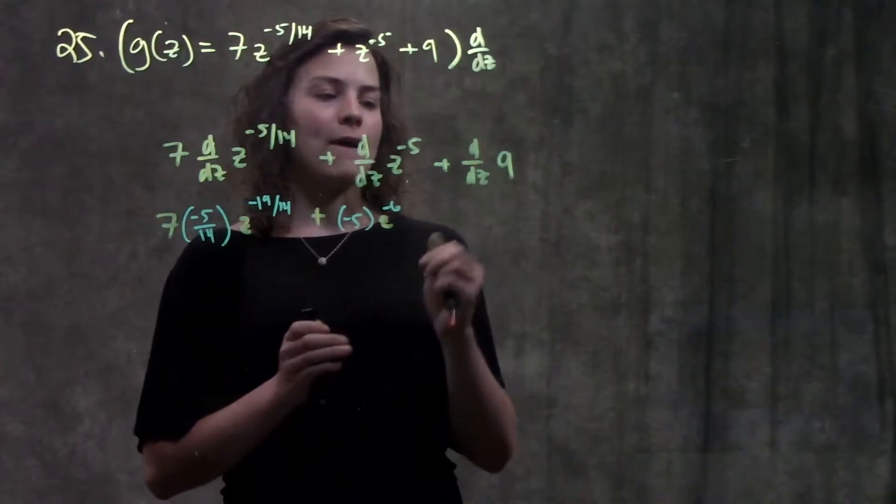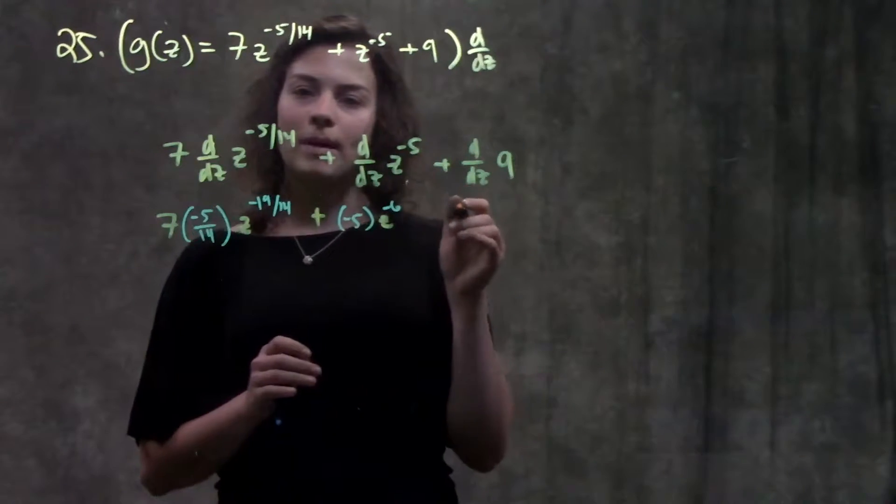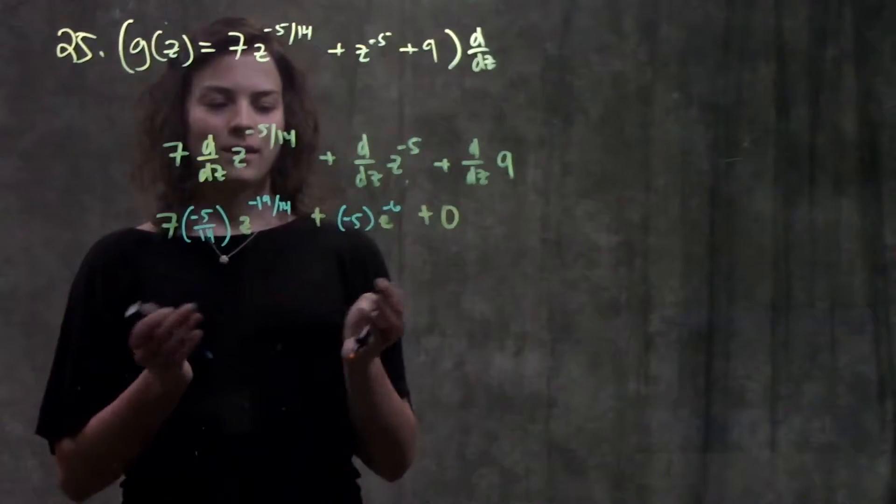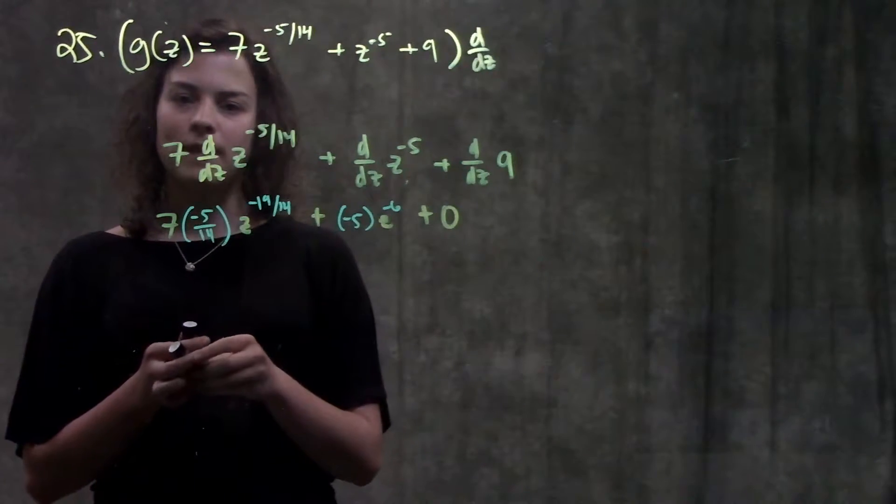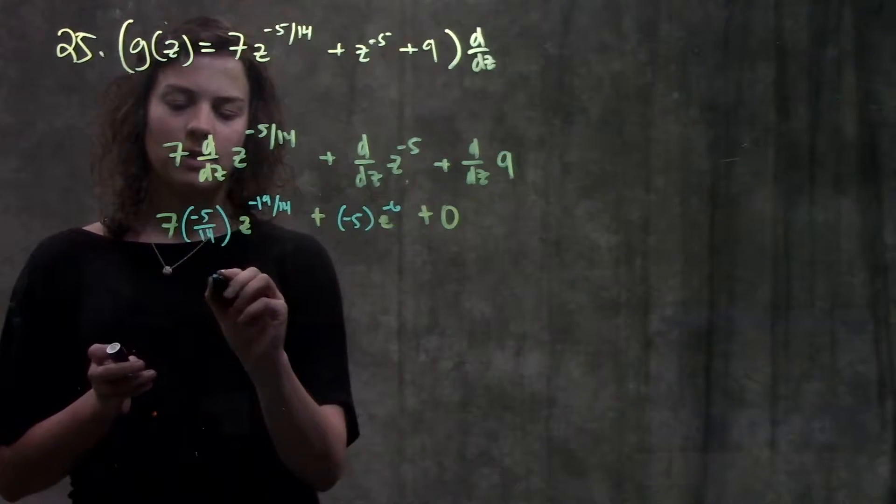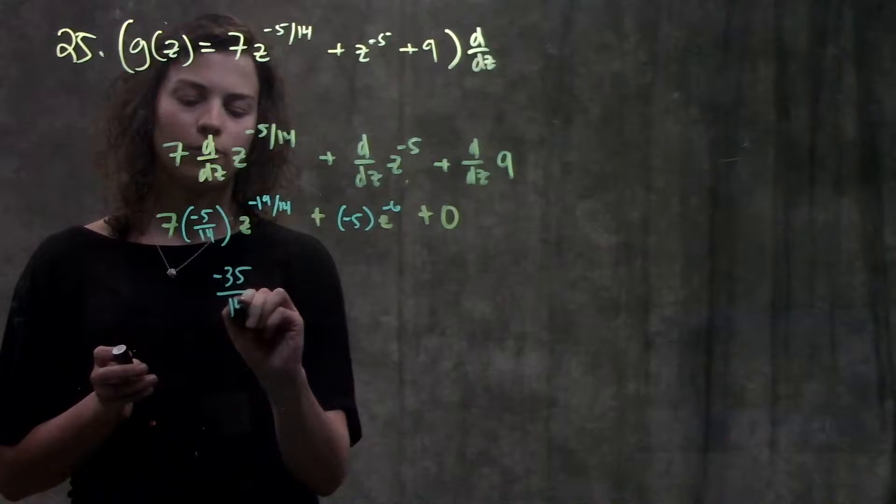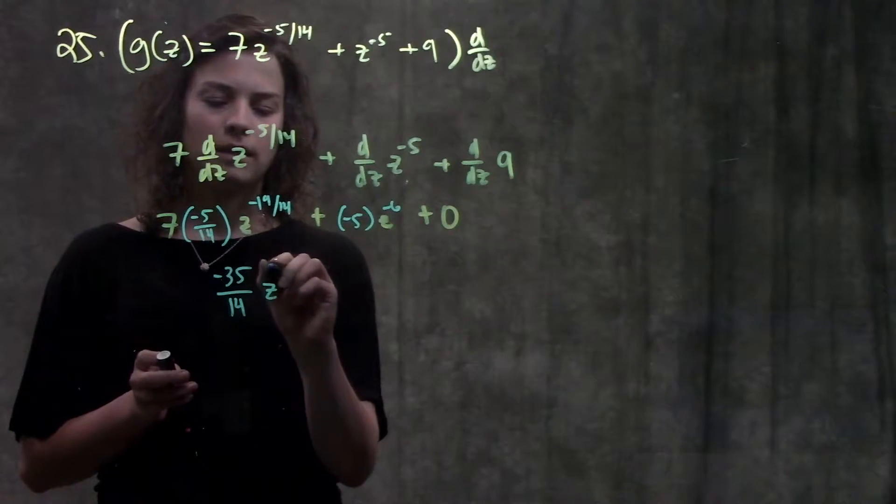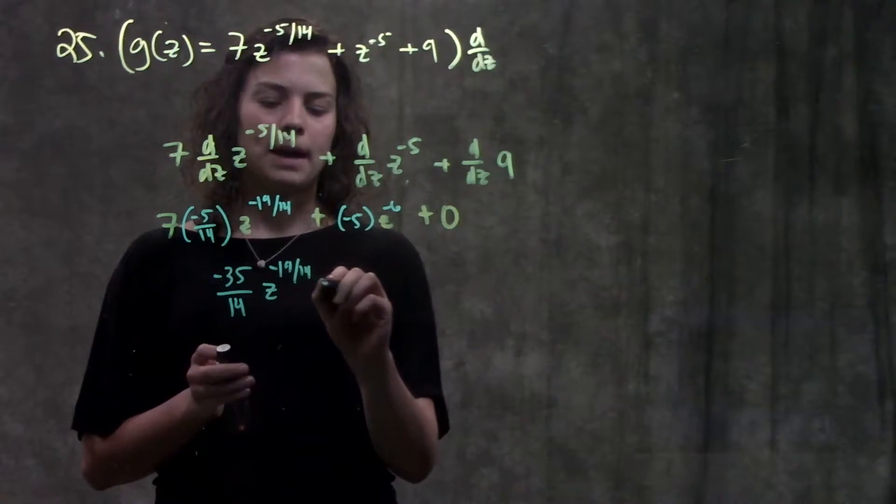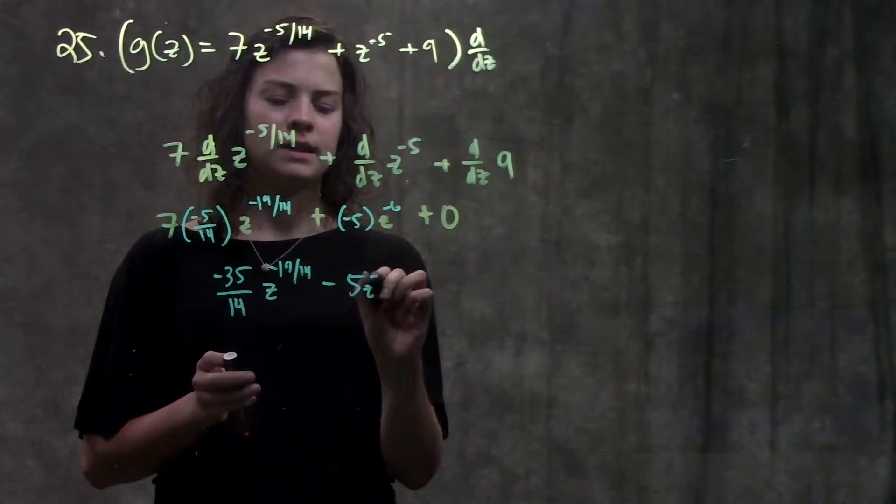And then in this last part, I have the derivative of 9. Remember, the derivative of any constant is just 0. Okay, I'm going to go ahead and simplify this. Over here, I have 7 times minus 5. That will give me minus 35 over 14, z to the minus 19 over 14, and then minus 5 times z to the minus 6.